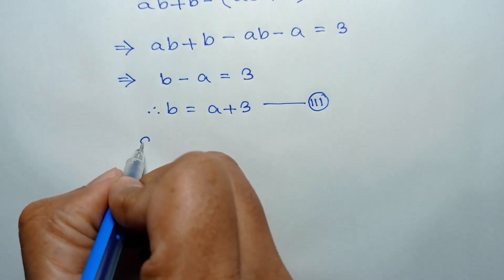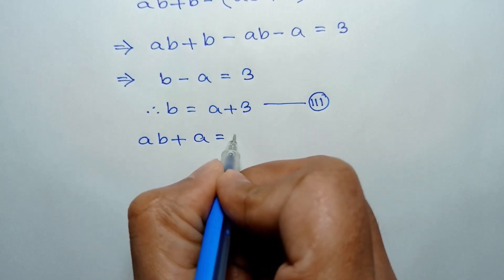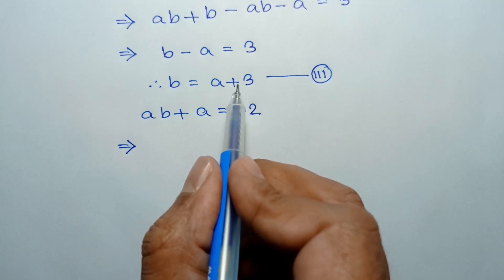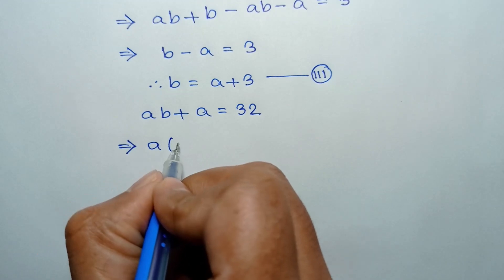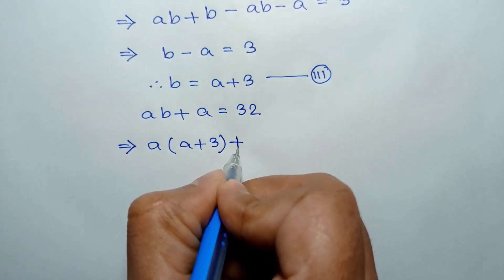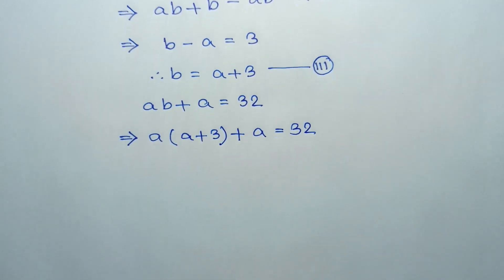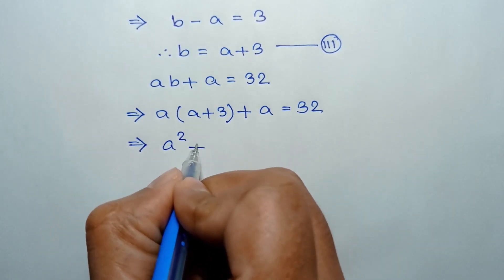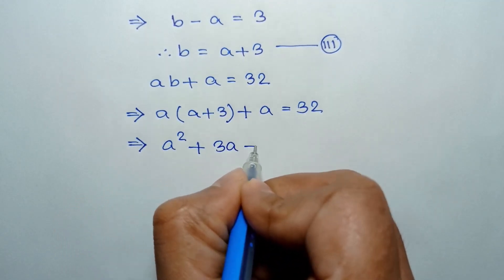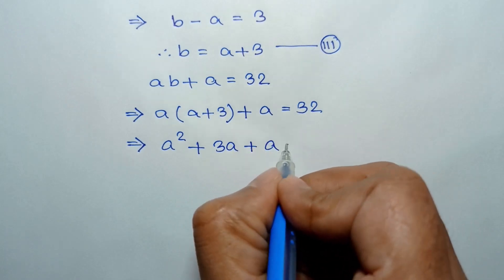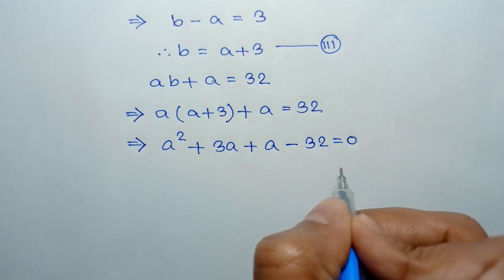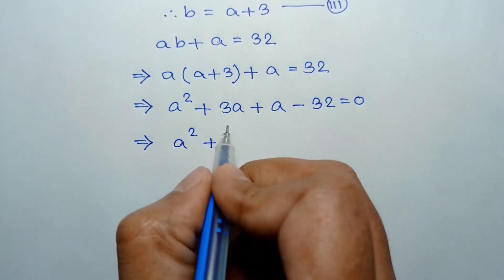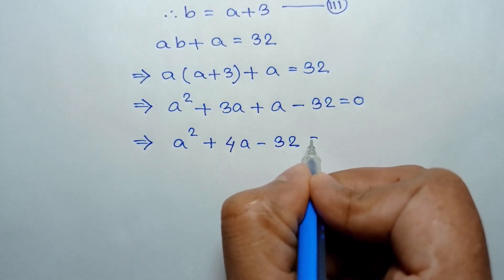Now, from equation 1, AB plus A is equal to 32. Substituting the value of B equal to A plus 3, we can write A times (A plus 3) plus A. Expanding: A squared plus 3A plus A, and taking 32 to the left side gives A squared plus 4A minus 32 is equal to 0.